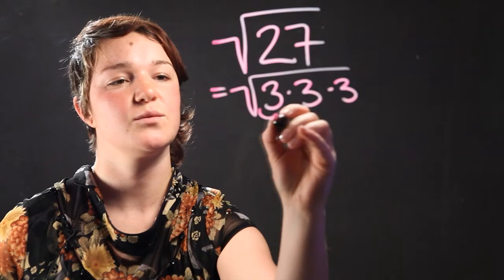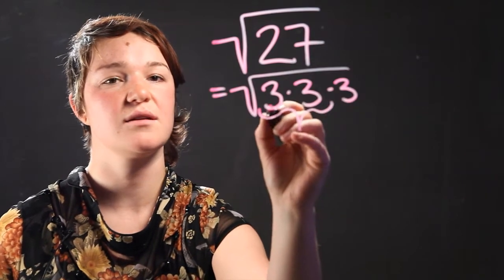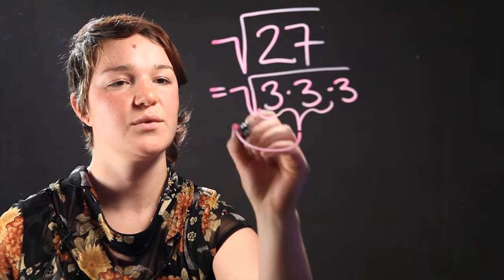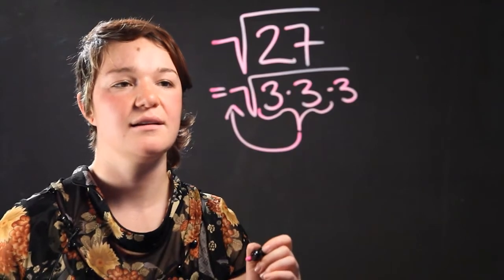In order to simplify this, we're going to take this number right here, 3 times 3, and we're going to put it outside of the expression.